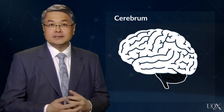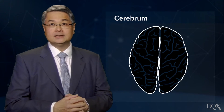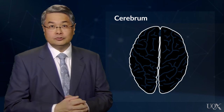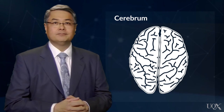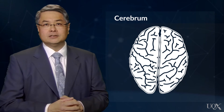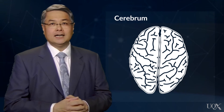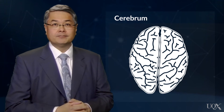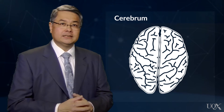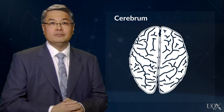The cerebrum is the largest region in the brain and it's divided into two hemispheres, left and right. There are symmetrical pairs of most of the key parts of the cerebrum in each hemisphere, such as the hippocampus and the temporal lobes.